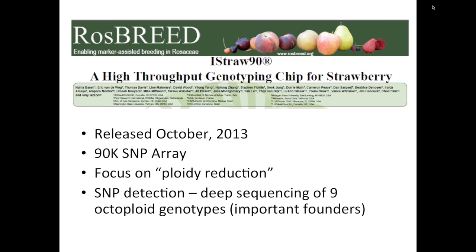The focus of this array was on ploidy reduction. Obviously, we have to have some way to focus on SNPs that are segregating in a diploid fashion. It utilized a SNP detection panel of nine diverse octoploid genotypes, which were important founders in cultivated strawberry germplasm from different major breeding programs. At the University of Florida, we submitted two important founders for our program as well.